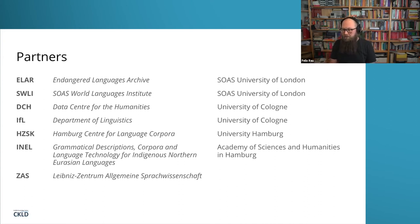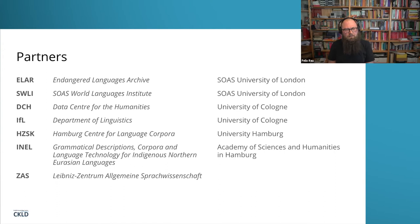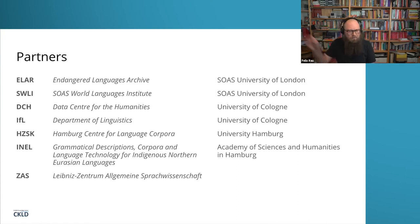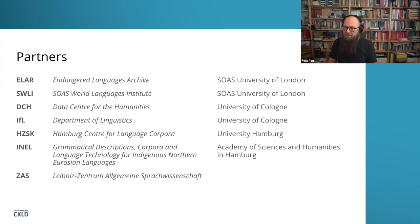The Department of Linguistics in Cologne, which has a research focus on language documentation and linguistic typology, is also part of the center. Then we have the Hamburg Centre for Language Corpora, a CLARIN B-centre, and the INEL project — a long-running project of over 18 years at the Academy of Sciences and Humanities in Hamburg, focusing on grammatical descriptions, corpora, and language technologies for indigenous northern Eurasian languages, mostly Arctic languages from Scandinavia and Russia. The later addition is the Leibniz-Zentrum Allgemeine Sprachwissenschaft in Berlin, which joined us after the CKLD had already started.